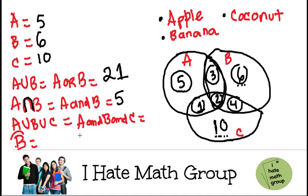Now, what about the people that like apples and bananas and coconut? Well, look, that means the whole union between apples, bananas and coconut. So how do I do that? Well, I'm going to add everything that I did before, 5 plus 3 plus 6 plus 4 plus 2 plus 1, which is 21, plus 10, and that's going to be 31.